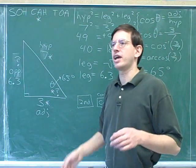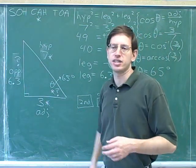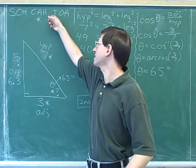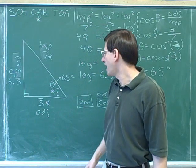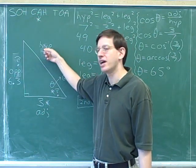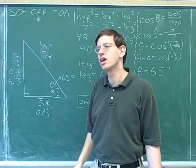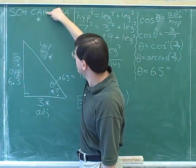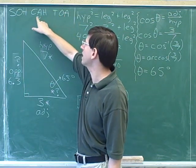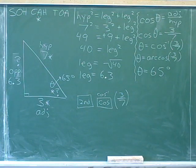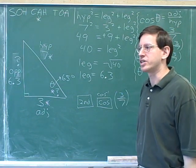On all the previous problems that I gave you, I was giving you the opposite and the adjacent sides. Well, when you're given the opposite and the adjacent sides, it's natural to use tangent and inverse tangent. But on this problem, I gave you the adjacent side and the hypotenuse. In this problem, you were given numbers for the adjacent side and the hypotenuse. Well, if you're given the adjacent and the hypotenuse, it's natural to use cosine and inverse cosine. Because cosine refers to the adjacent and the hypotenuse sides.